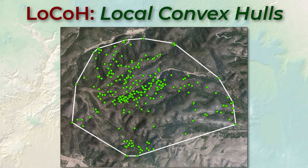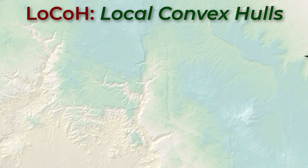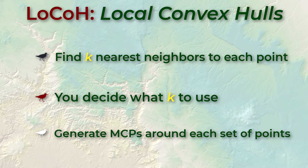Here's how LoCoH works. We start by looking at the standard MCP around all the owl locations we were looking at earlier — the full convex hull. Visually we can see some parts of the hull are used more than others, so this simple MCP is missing important information about where the owl prefers to be. The LoCoH method starts with finding the k nearest neighbors to every point — you specify the value of k. Larger numbers produce output closer to the original full MCP; if k equals the total number of points you end up with the full MCP. Lower values of k classify the landscape in a much tighter range around clusters of points.